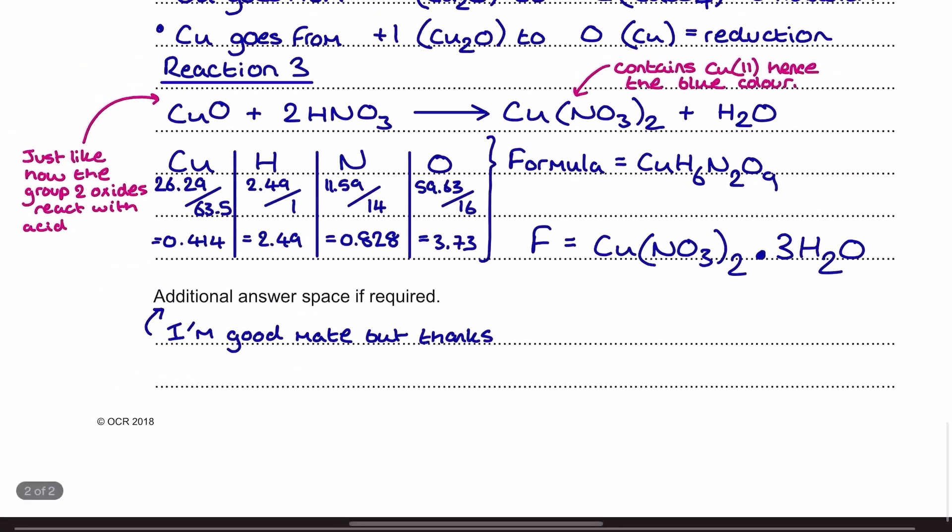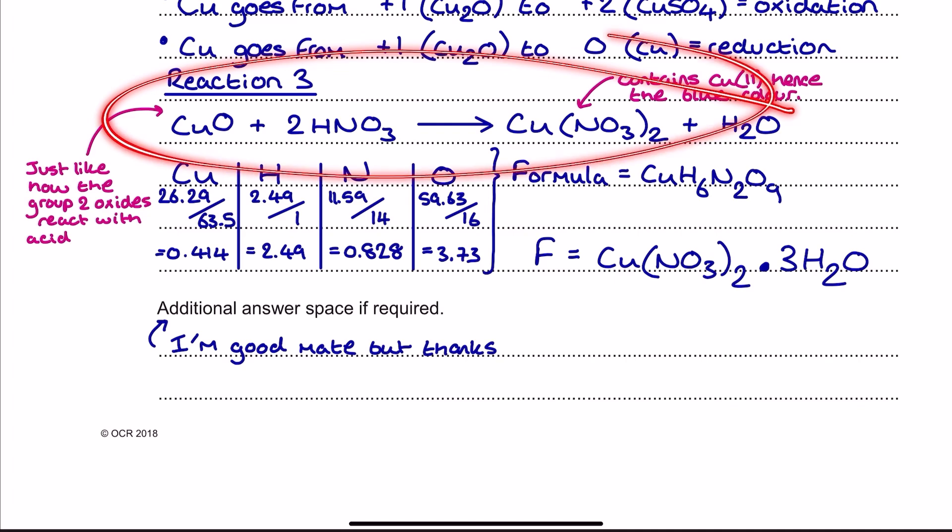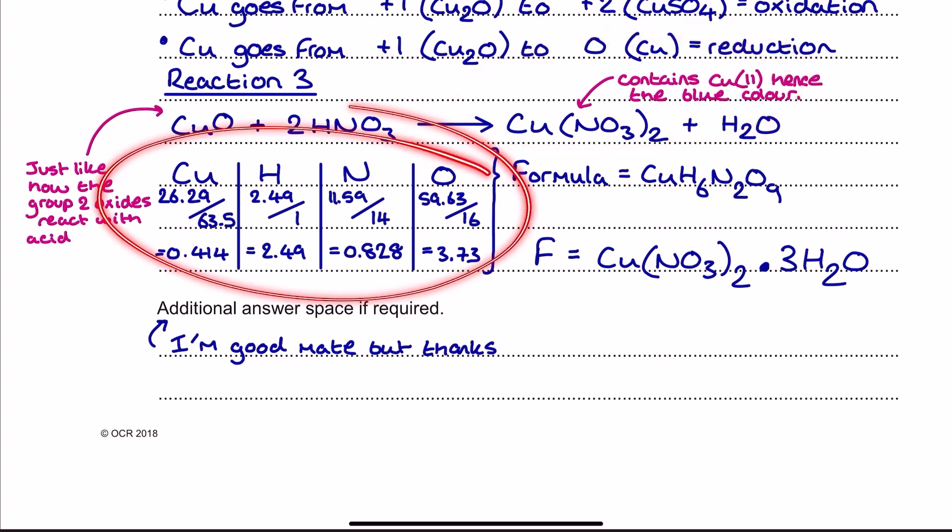So for reaction 3, just at the bottom down here, we've got our reaction equation, which is the copper 2 oxide reacting with the nitric acid to form copper 2 nitrate and some water just here. The blue solution, you might say, I thought copper 2 sulfate was blue. Remember, it's not the sulfate that makes it blue. It's the copper 2 part. So the copper 2 nitrate here is just as blue. We've then got all of this information here, which is our percentage composition by mass. You know what to do with this. It's empirical formula. And so the empirical formula of the salt is going to be CuH6N2O9.